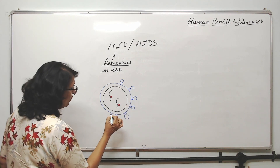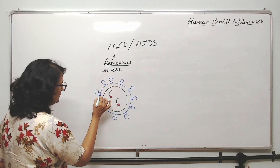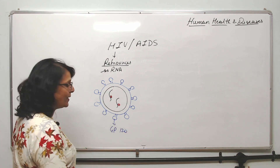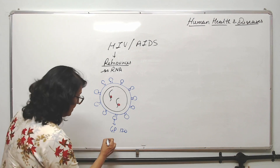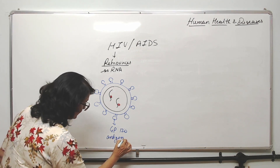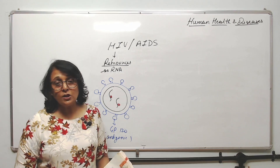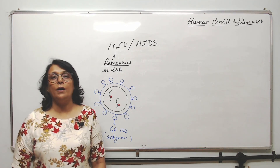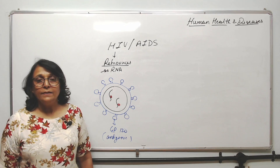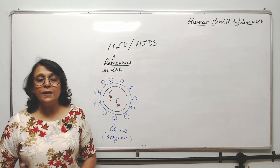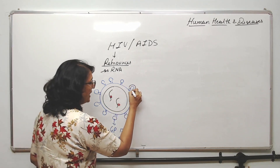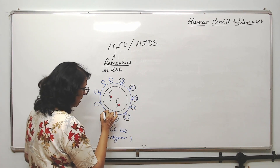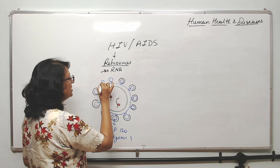The glycoproteins on the virus are called GP120, and they are antigenic — meaning they act as antigens. One might wonder why the body doesn't make antibodies to destroy this virus. The reason is that these GP120s are masked — they are covered by a non-antigenic sheath, so the antigen is not exposed and the body cannot detect it.